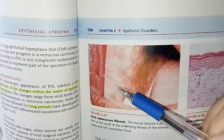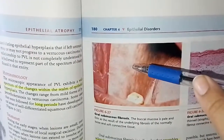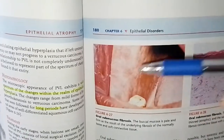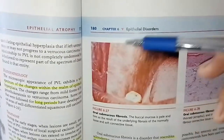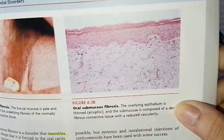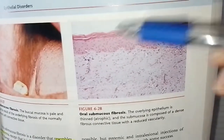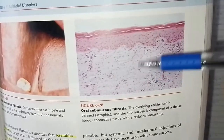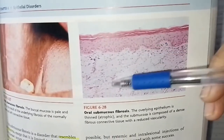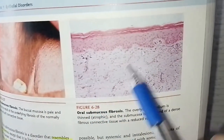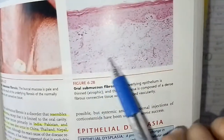The buccal mucosa in oral submucous fibrosis is pale and firm, with fibrosis of the connective tissue, which is normally loose and soft. In the histopathology, the overlying epithelium is thinned and atrophied, the submucosa is dense fibrous connective tissue, and there is a very reduced number of blood vessels.